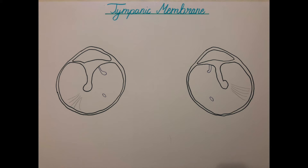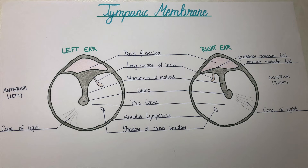Let's now talk about the orientation of the tympanic membrane. As you can see on the poster, I drew both the left ear and the right ear, and on the respective outer sides you can see the anterior portion — for the left ear the left portion, and for the right ear the right portion. You can orient yourself on the manubrium of the malleus and the umbo, which are pointing slightly to the left side or to the anterior side.